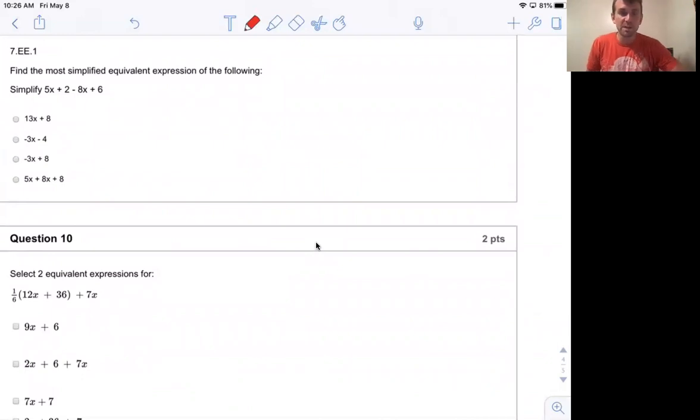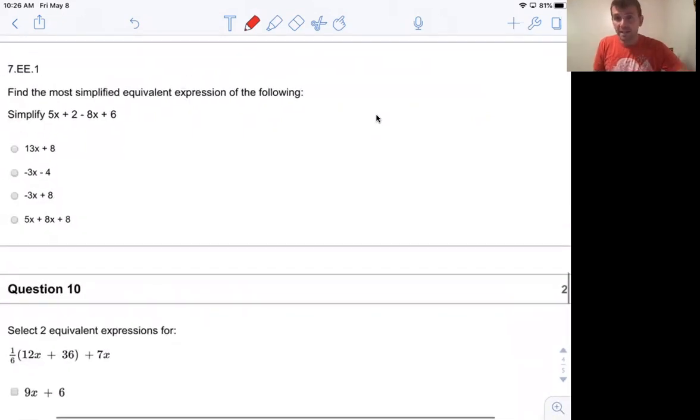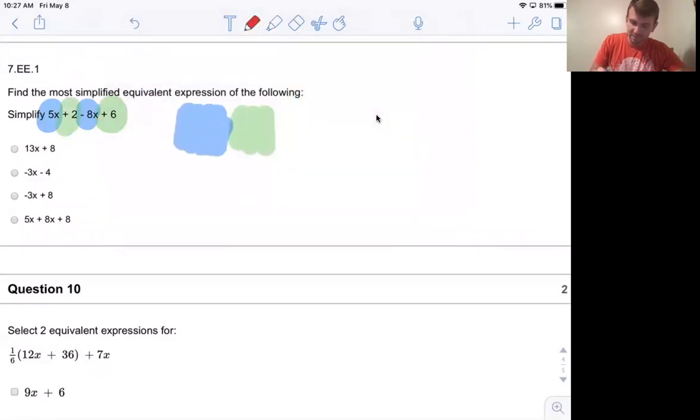Find the most simplified equivalent expression of the following: 5X plus two minus 8X plus six. This is going to be a combining like terms problem, because if I want to simplify this, I want to get rid of parentheses. Do I see any parentheses? No. So I'm going to combine like terms. So my like terms are going to be the 5X and the minus 8X, and then the positive two and the positive six. I can combine the 5X and the minus 8X because both of them have an X multiplied by it. So 5X minus 8X, we want to take the sign in front of each of the numbers, is going to be negative 3X. And then the positive two plus six is going to be positive eight.